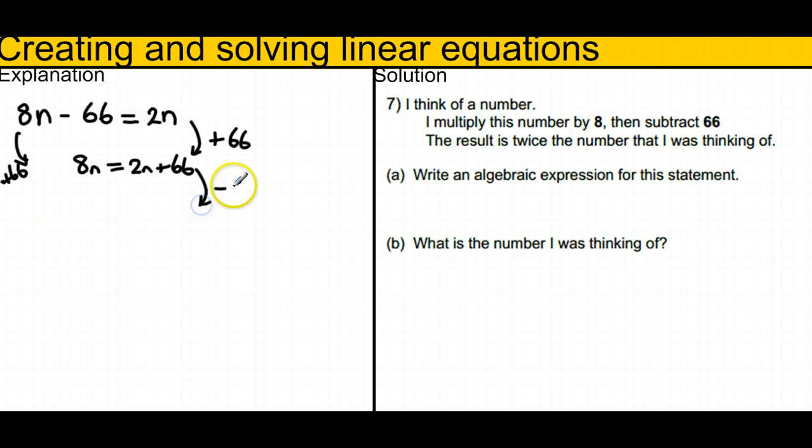Then I'm going to take away 2n from both sides. It gives me 6n equals 66. And if I therefore divide by 6, I end up with n equals 11.